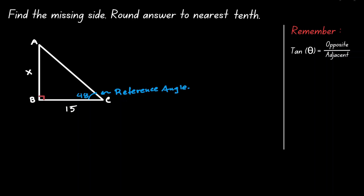Now let's label our triangle using the reference angle. The side that is opposite to 90 degrees is the hypotenuse. The side that is opposite to our reference angle is the opposite side. And the side that is next to the reference angle is our adjacent.